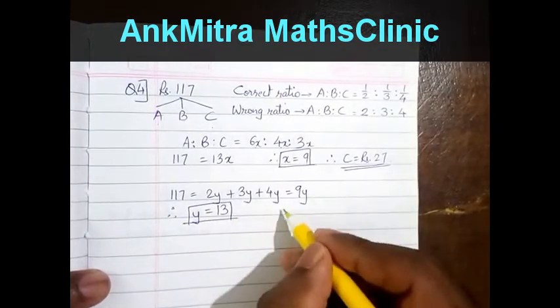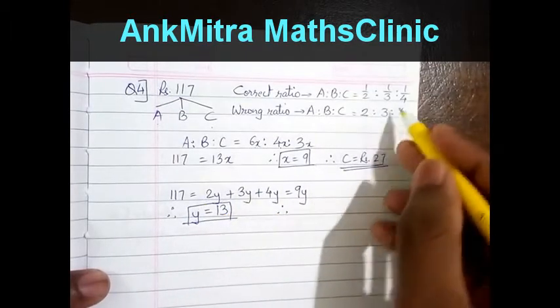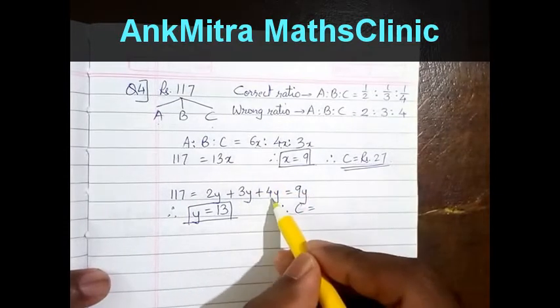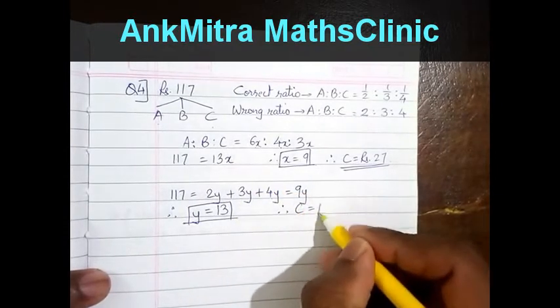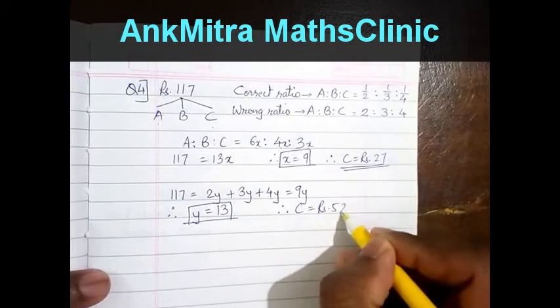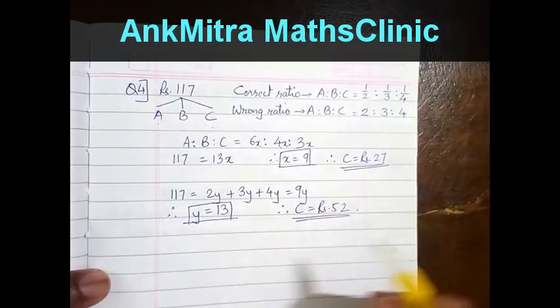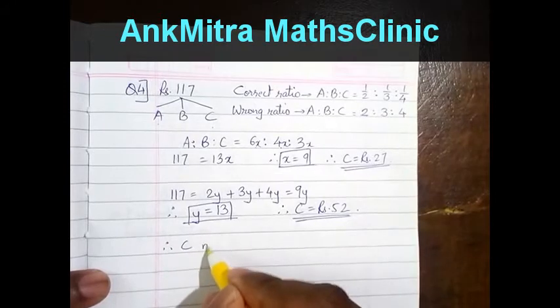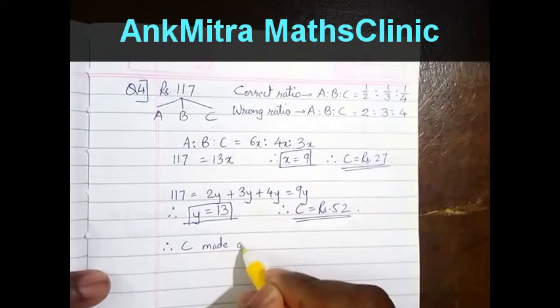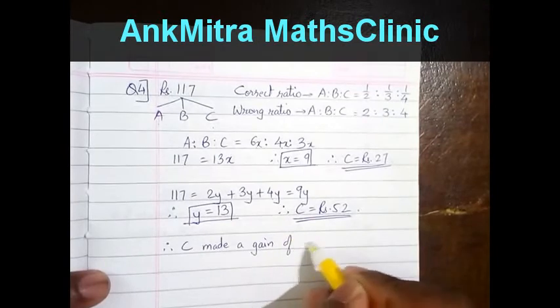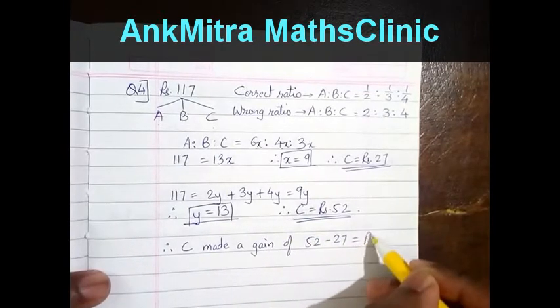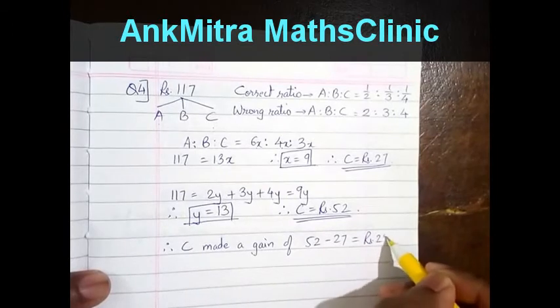Since y = 13, the value that C got incorrectly was 4y, that is 4 × 13 = rupees 52. That means C made a gain of 52 - 27, which equals rupees 25.